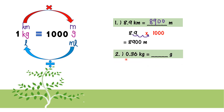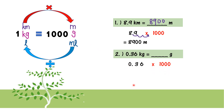Next: 0.36 kg converted to grams. kg is on the left, converting to the right, so I also multiply by one thousand. I move the decimal point three steps to the right: one, two, three. There is an empty place after six, so I add a zero at the back. The answer is 360 grams.